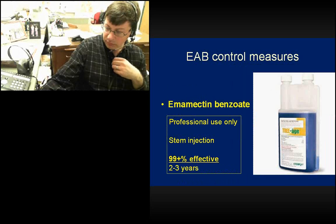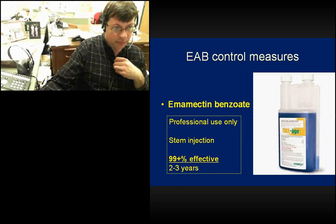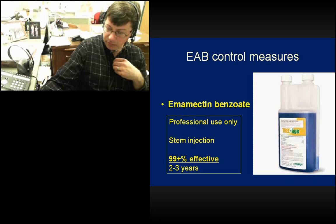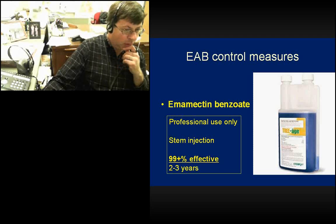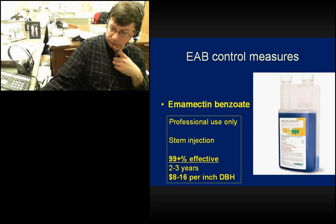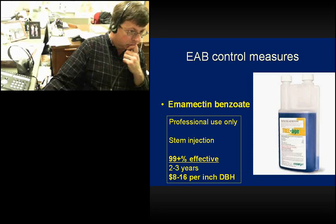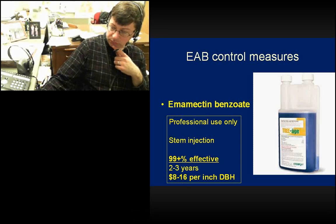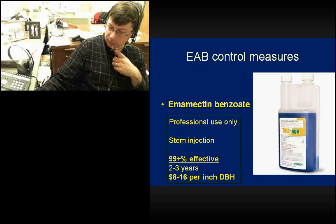The big gun is emamectin benzoate, sold under the trade name Triage. This is professional use only, applied via stem injection, and is 99-plus percent effective — it really gets EAB. It is effective for two years for certain, and some tests have shown up to three years. In terms of cost, companies are charging anywhere from $8 to $16 per inch of DBH, so for a 10-inch tree that would cost $80 to $160 for the injection, which lasts two years.